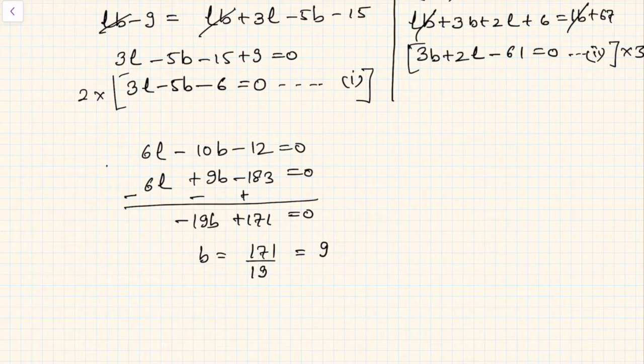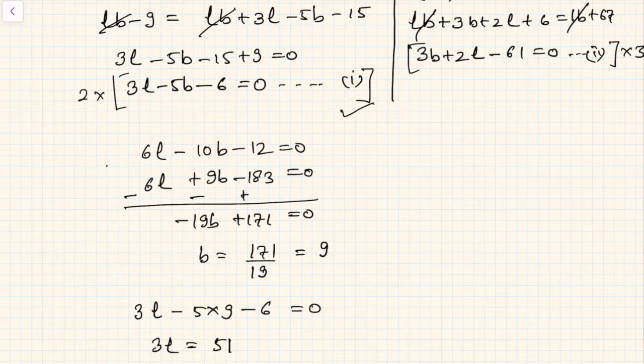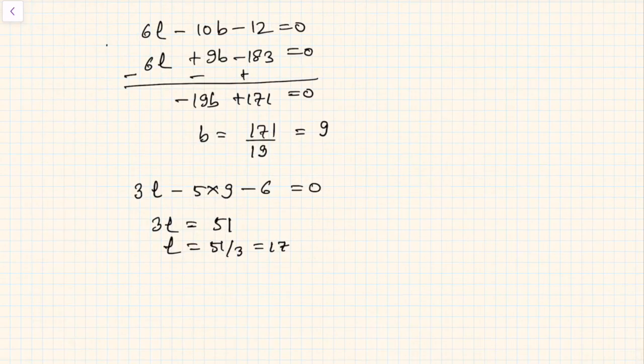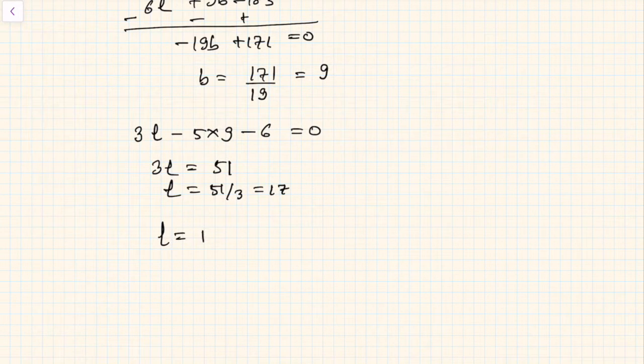Now when B is 9, you can find out L. Let us use the first equation: 3L minus 5 into 9 minus 6 equals 0. So 3L will be equal to 51, which means L is 51 upon 3, that is 17. Hence the dimension of the rectangle is 17 and breadth is 9.